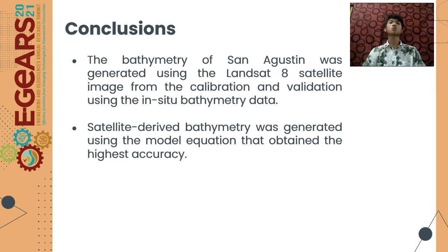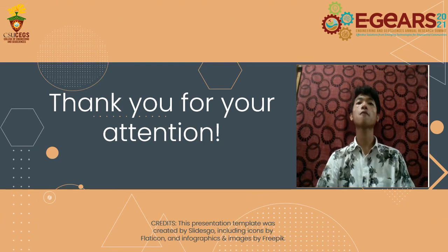In conclusion, the bathymetry of San Agustin was generated using the Landsat 8 satellite image through calibration and validation using the in-situ bathymetry data. The satellite-derived bathymetry was generated using the model equation that obtained the highest accuracy. Thank you for your attention.